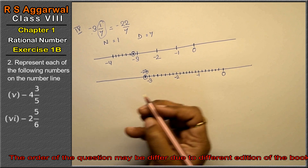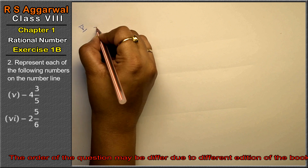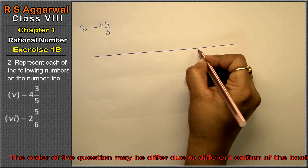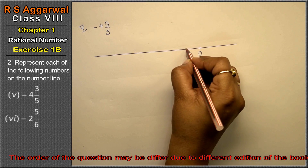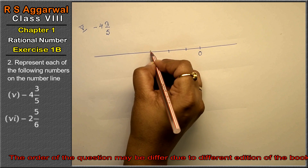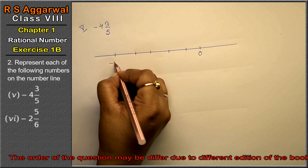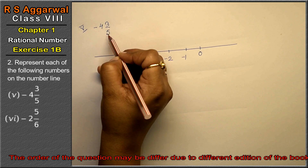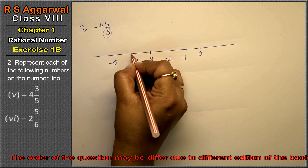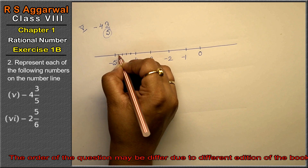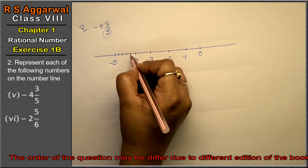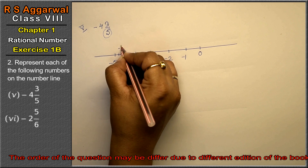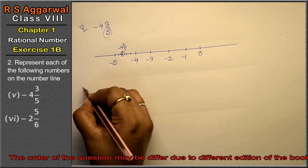Let's do 5th part. 5th part is minus 4 whole 3 upon 5. Simple - 0, minus 1, minus 2, minus 3, minus 4, minus 5. Ab jitna denominator hai utte parts banayenge: 1, 2, 3, 4, 5. Aur jitna numerator hai utte parts pe point lagayenge. This is the number - minus 4 whole 3 upon 5 is the number.